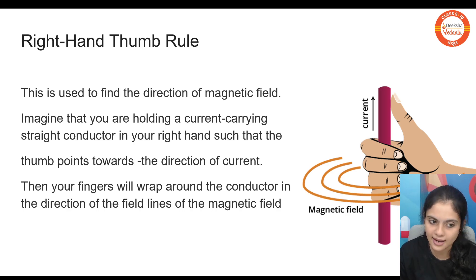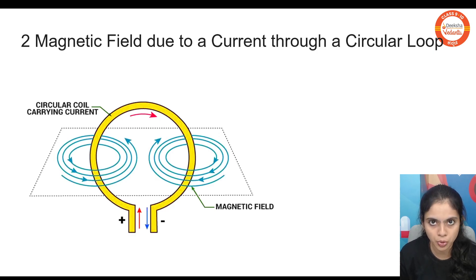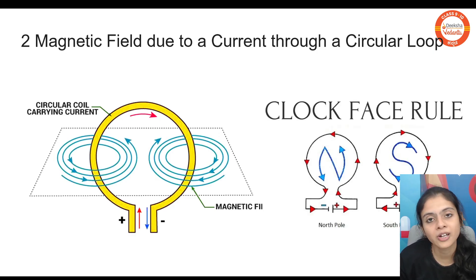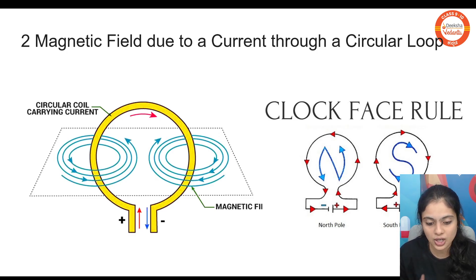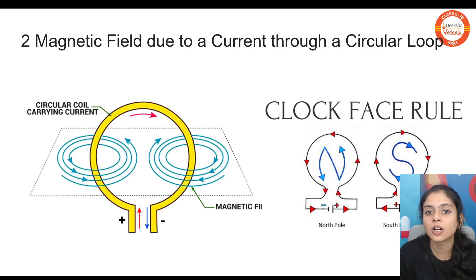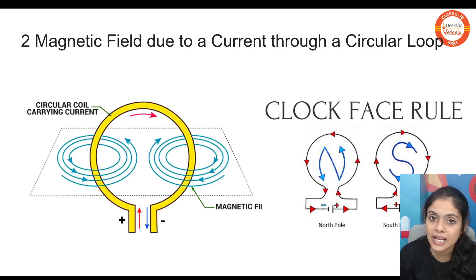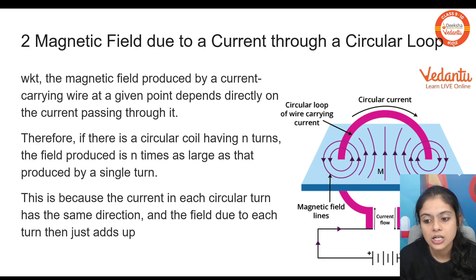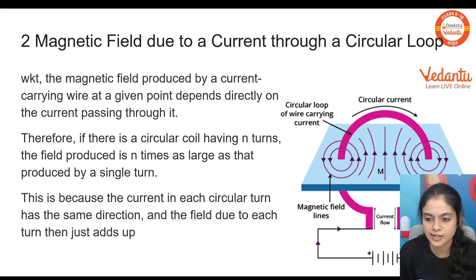If I take a straight wire and make it a circular loop, there is an important rule to remember the direction of the magnetic field. If the current is flowing in the anti-clockwise direction, it creates a north pole. If it is moving in the clockwise direction, it creates a south pole. In the center of the circular loop, you can see a straight line formed because of the combining of the concentric circles from both ends of the wire.